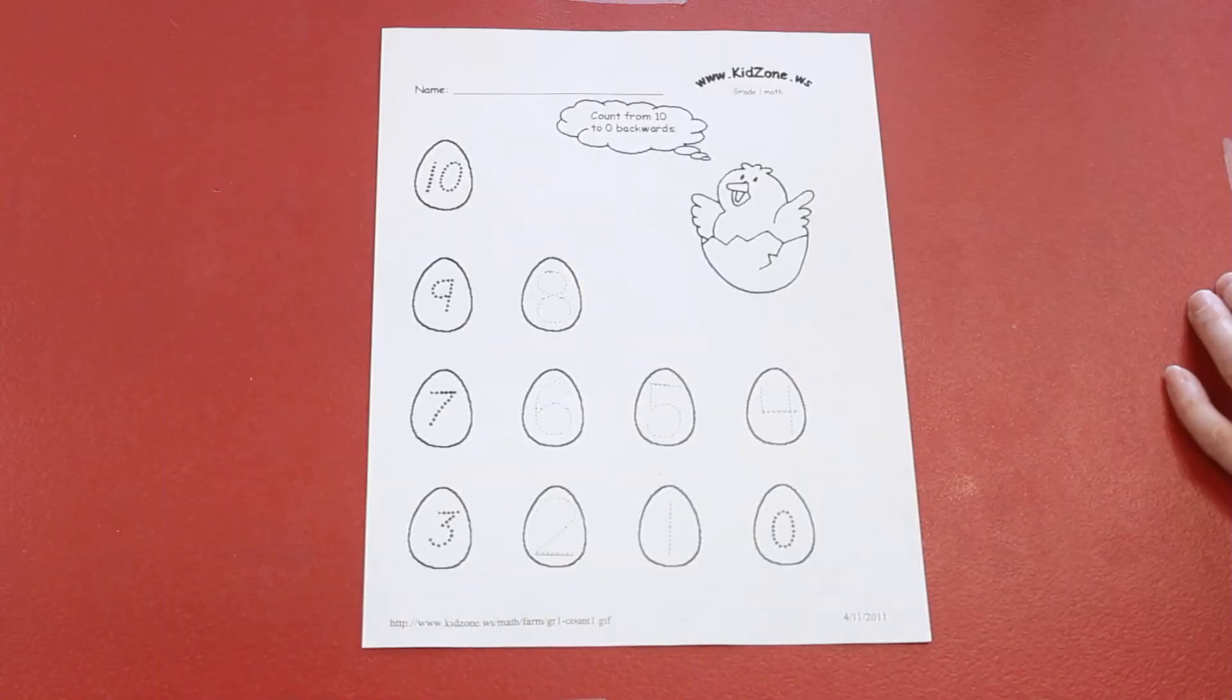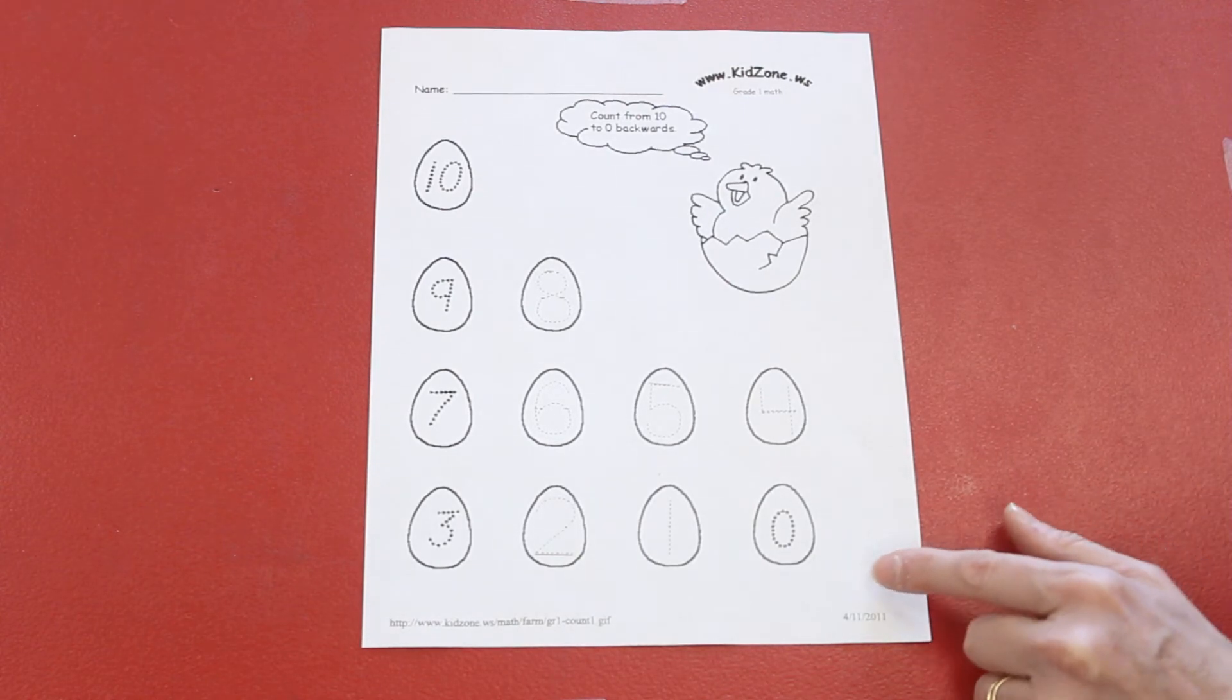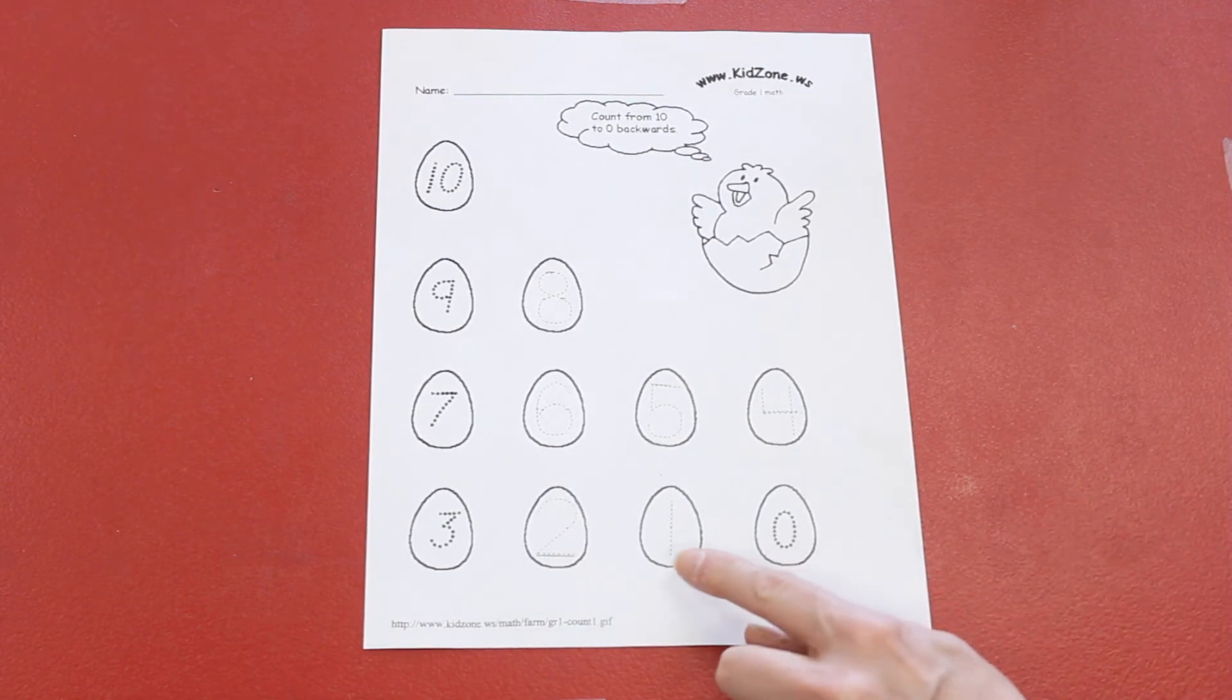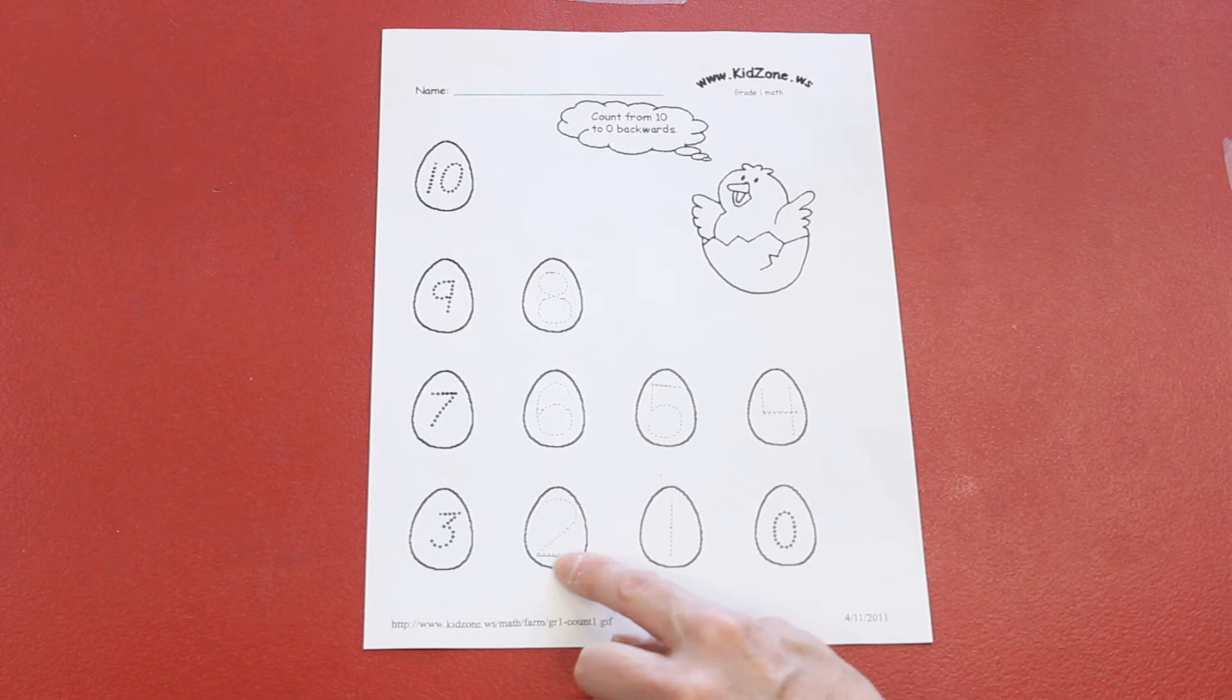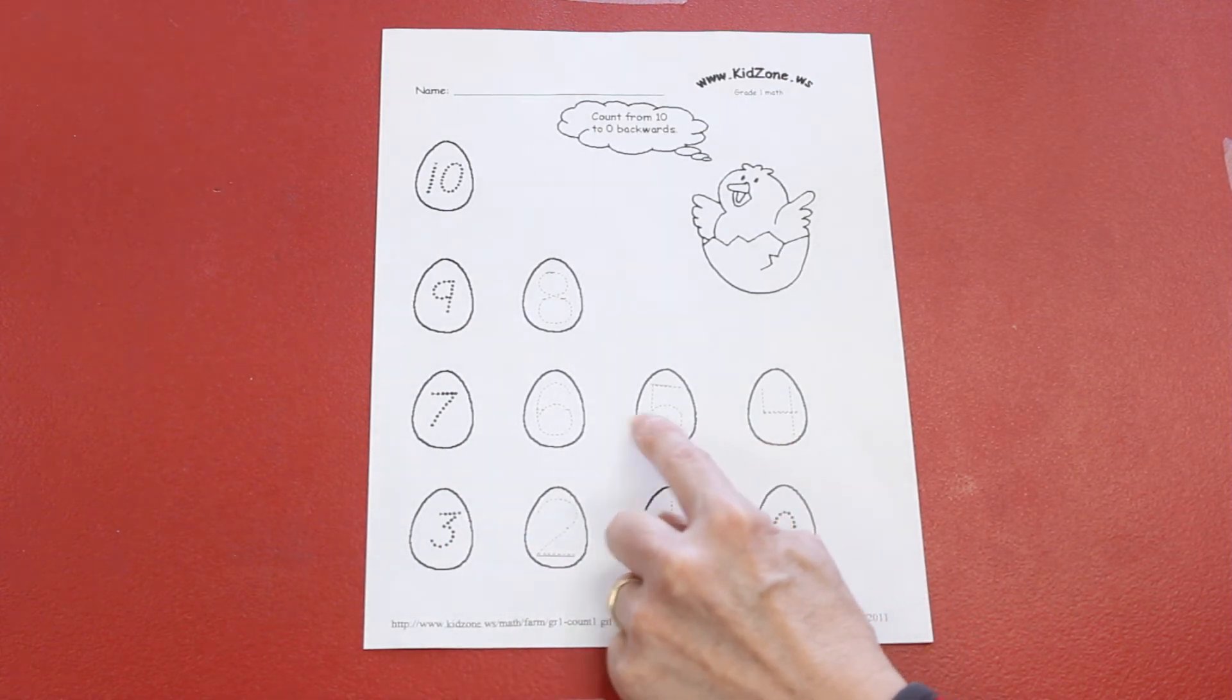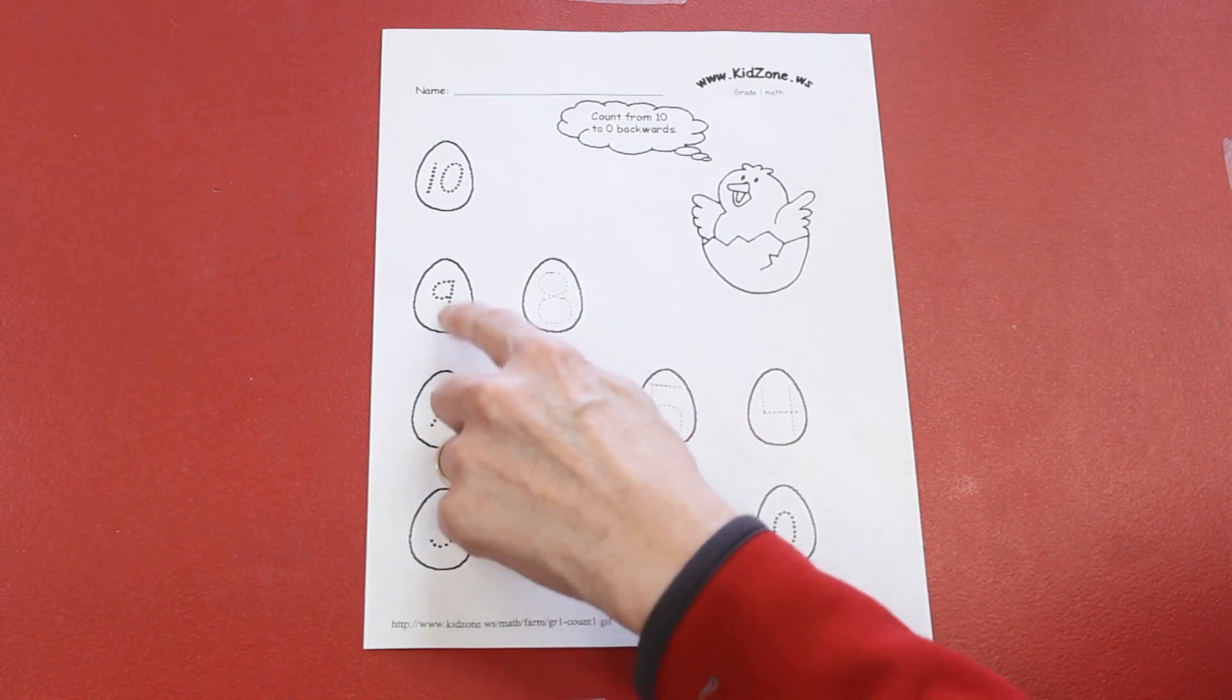So we just got done counting ten eggs. How many eggs are on this paper? Let's count them. We won't count the one that says zero. Let's start with one. One, two, three, four, five, six, seven, eight, nine, ten.